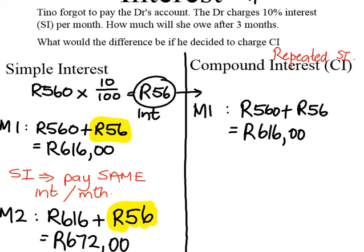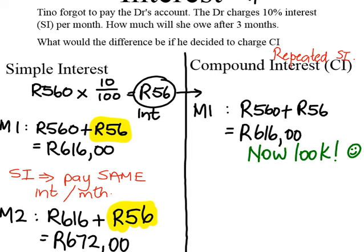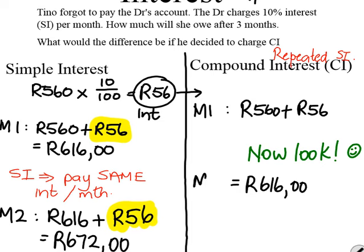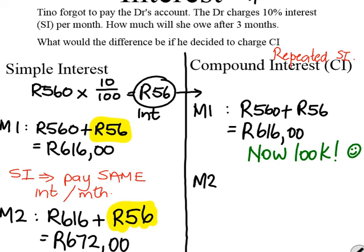But the difference starts here. I am going to take this amount into month two. I take 616 Rand, and now I find 10% of 616 Rand.